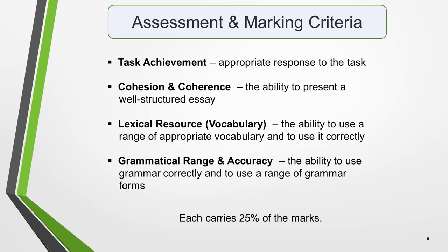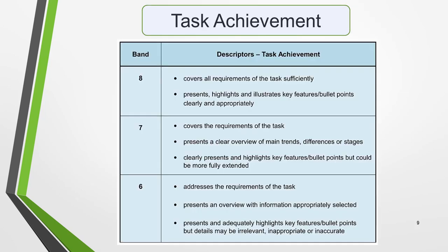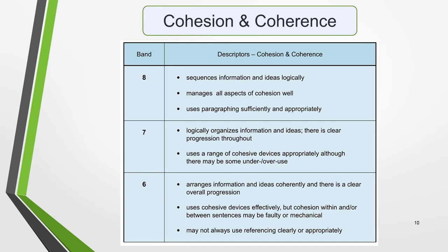We're going to focus on bands 6 to 8, as these are the levels most students are aiming for. On this slide and the next are tables of the official marking criteria for task achievement and coherence and cohesion. Pause the video if you want to read through them. Don't worry if the detail seems rather complex — if you follow my advice in all the lessons on how to write essays for Academic Writing Task 1, you'll be able to meet these criteria and get a good score.